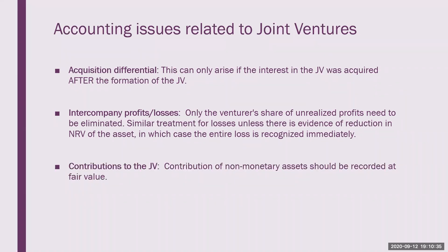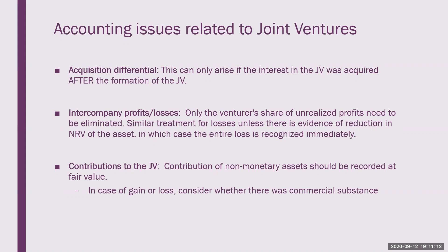Because joint ventures can be formed, there can be initial contributions to the joint venture. Contributions by the venturers of cash are reported fairly simply: debit cash in the investment in the joint venture and credit cash. However, when there is a contribution of a non-monetary asset, such a contribution should be recorded at fair value, and if the fair value of the asset transferred is different from the book value, the resulting gain or loss will be booked depending on whether the transfer has commercial substance or not.